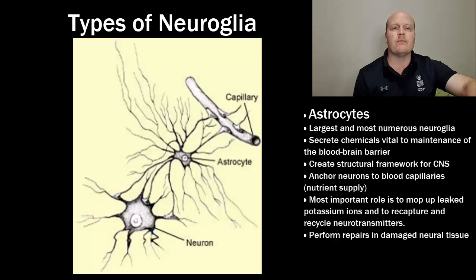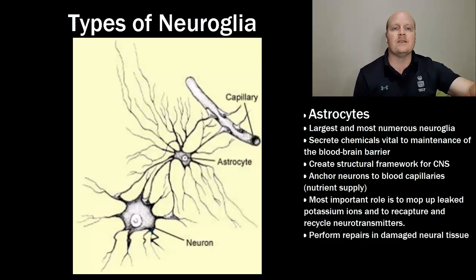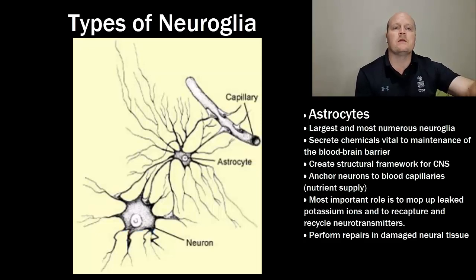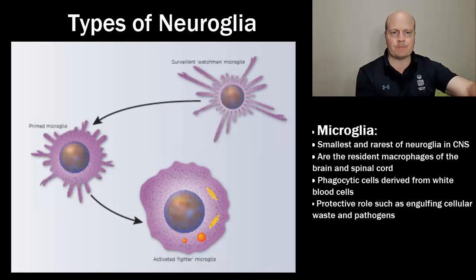Astrocytes are the largest and most numerous neuroglia. They secrete chemicals vital to the maintenance of the blood-brain barrier and create the structural framework for the central nervous system. They anchor neurons to blood vessels to ensure a good nutrient supply. One of their most important roles is to mop up leaked potassium ions and to recapture and recycle neurotransmitters. They also perform repairs in damaged neural tissue.